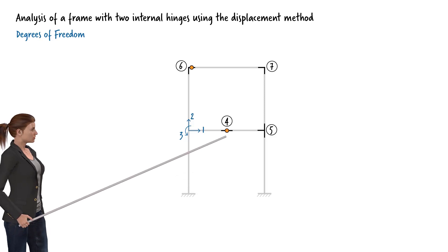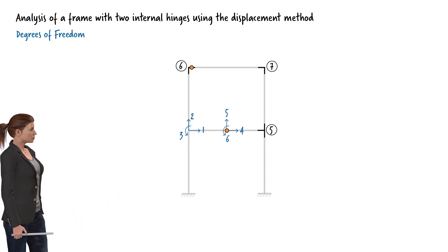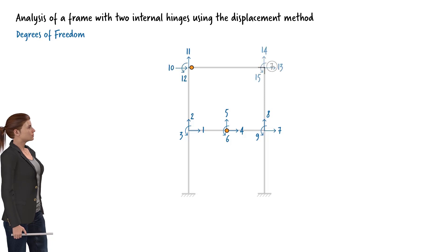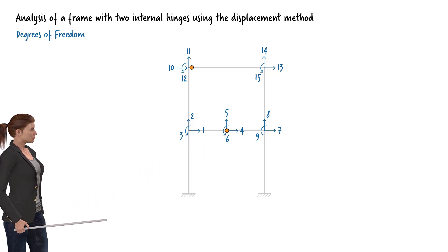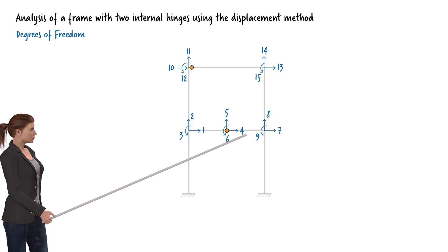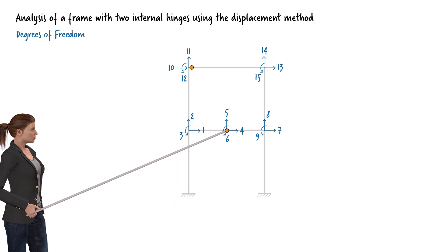Assuming there is no hinge at node 4, similar to node 3, we can define three degrees of freedom there. The degrees of freedom at nodes 5 through 7 can be defined and numbered similarly. In this numbering scheme, we assume the nodes to be rigid — that is, the ends of the members connected to a node share the same horizontal and vertical displacements and rotation. However, the ends of the short beams spliced together at node 4 do not share the same rotation; therefore, we need to associate two degrees of freedom with rotation at node 4.